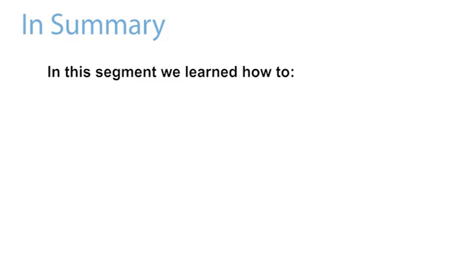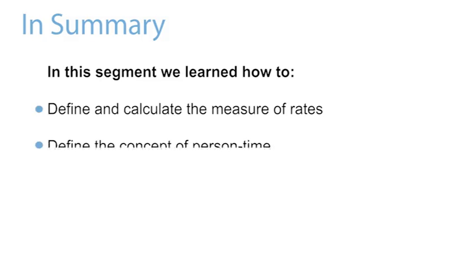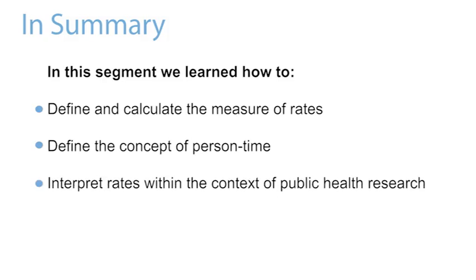This concludes the segment on the measure of health outcome occurrence known as rates. In this segment, we have learned how to define and calculate rates. We've also defined the concept of person time, and you've learned how to interpret rates within the context of public health research.